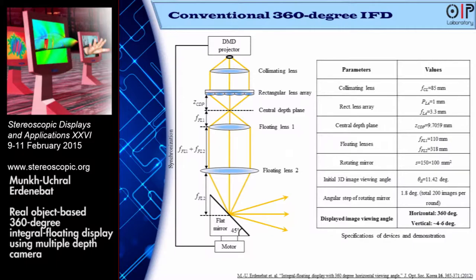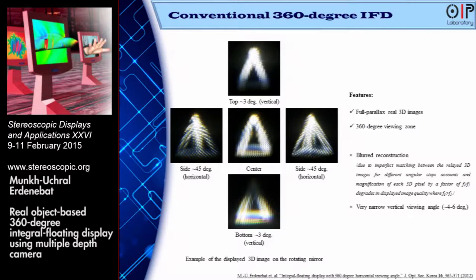But the vertical viewing angle is certainly narrow due to the function of the double floating lenses. Here is an example of the displayed image — the vertical viewing angle is very narrow, but the horizontal viewing angle is unlimited at 360 degrees.